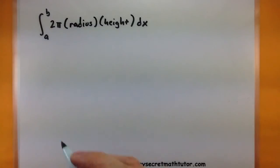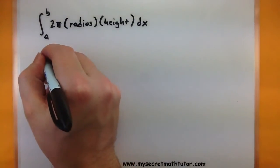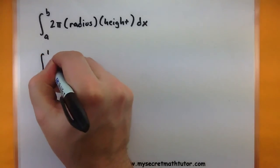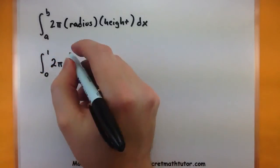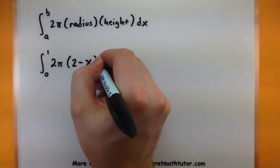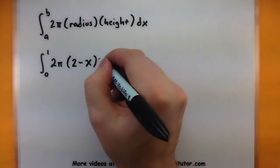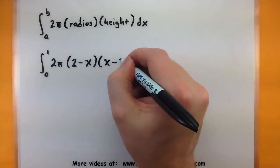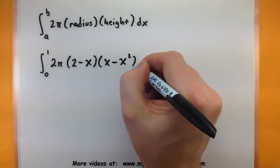Let's put in those pieces. So this will become the integral from 0 to 1, 2 pi, here's that radius part, 2 minus our x value. And now the height, x minus x squared dx.